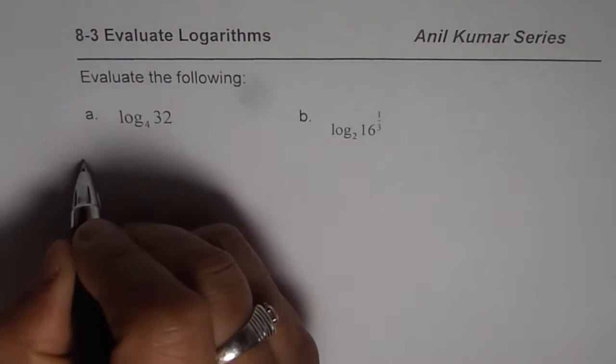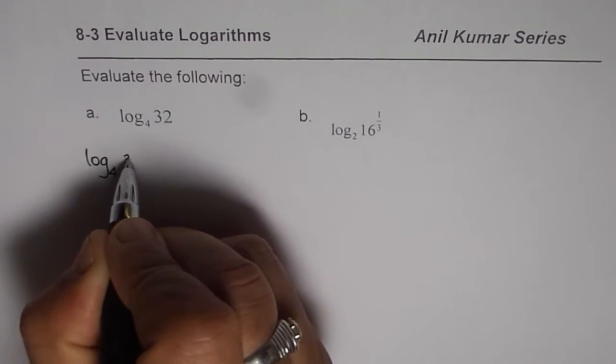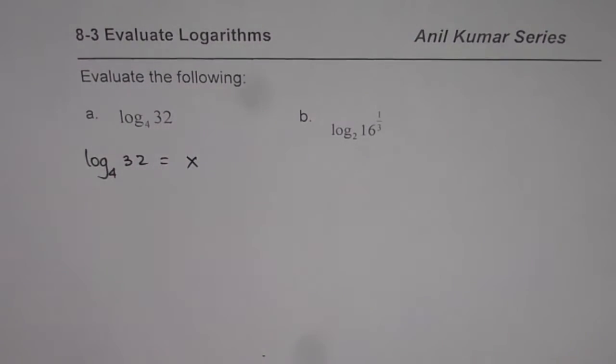Well, the easy method is like this. You can always write down log₄32 equals to x. x is what we need to find, correct?